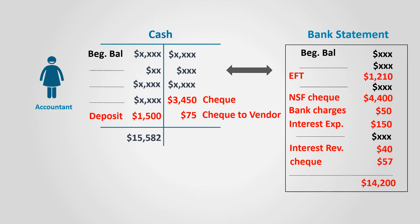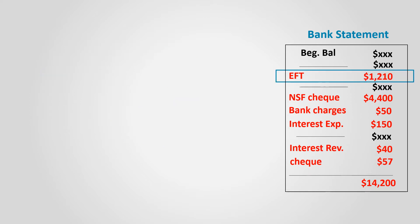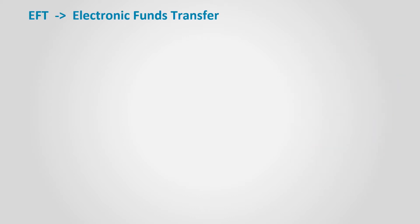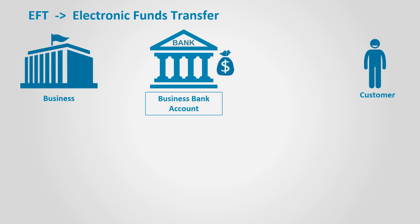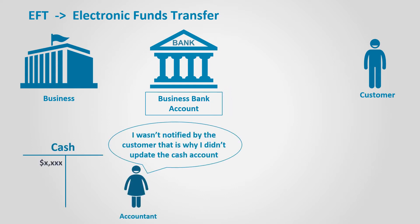Let's illustrate some common differences. Starting with Electronic Fund Transfer, or EFT. EFT appears on the bank statement when a customer transfers or deposits money electronically to the business. The bank adds the money to the bank statement, but the business is not yet notified about the transfer, so it's not added in the cash account.